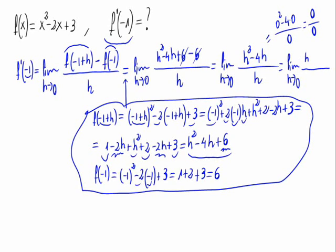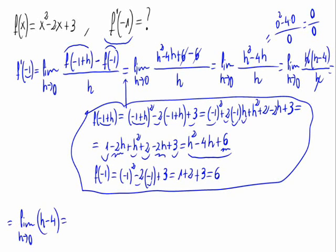To solve it, let's factorize the polynomial in the numerator. We get h times h minus 4, divided by h. We can cancel the h's. So the limit when h approaches 0 is h minus 4. Substituting h by 0, we get 0 minus 4, which equals minus 4. This is the result of the derivative at minus 1.